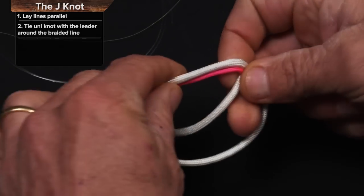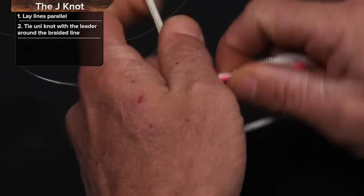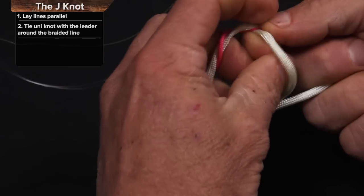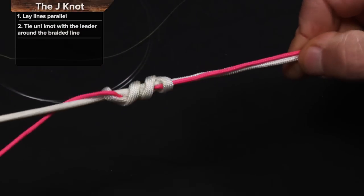So we're going to tie a uni knot right here. One, two, three, four times around. Pull that tight.